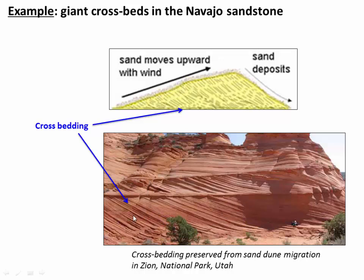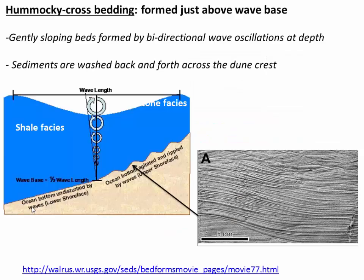We also see cross bedding at a much smaller scale. Another type is called hummocky cross bedding — very shallowly dipping beds that tend to drape on top of one another. They have a cross bedding effect, but are much less steep and occur dipping in both directions, off to the right in some places and off to the left in others. These lower-angle, bidirectional beds are formed by oscillations of wave currents at depth, where waves push both forward and backward in a relatively gentle motion, moving sand back and forth.